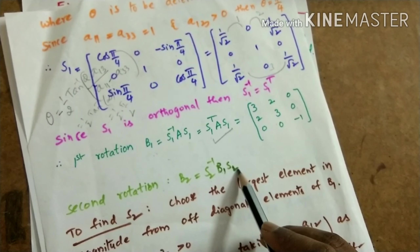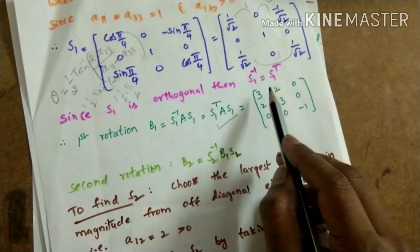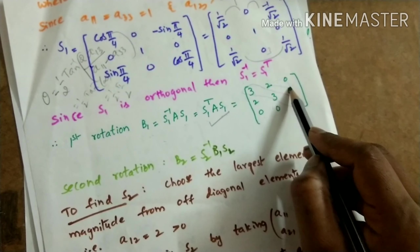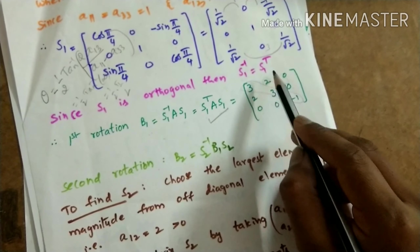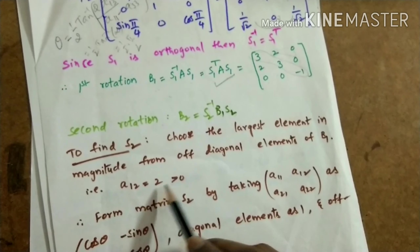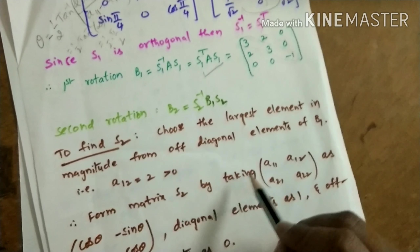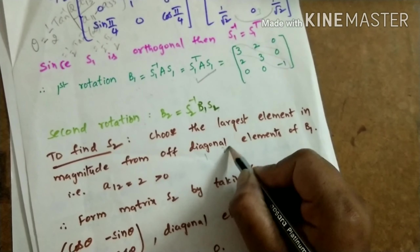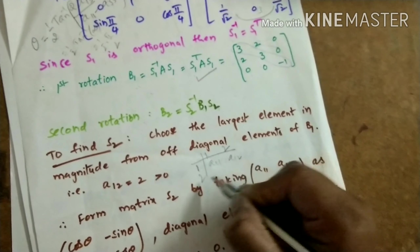Putting k = 2 in the general formula: B2 = S2⁻¹ B1 S2. S2 is to be determined using the matrix B1. From B1 the diagonal elements are 3, 3, −1, and the off-diagonal elements above the diagonal are 2, 0, 0. Among these, 2 is the largest element in magnitude, located at first row, second column, position A₁₂.